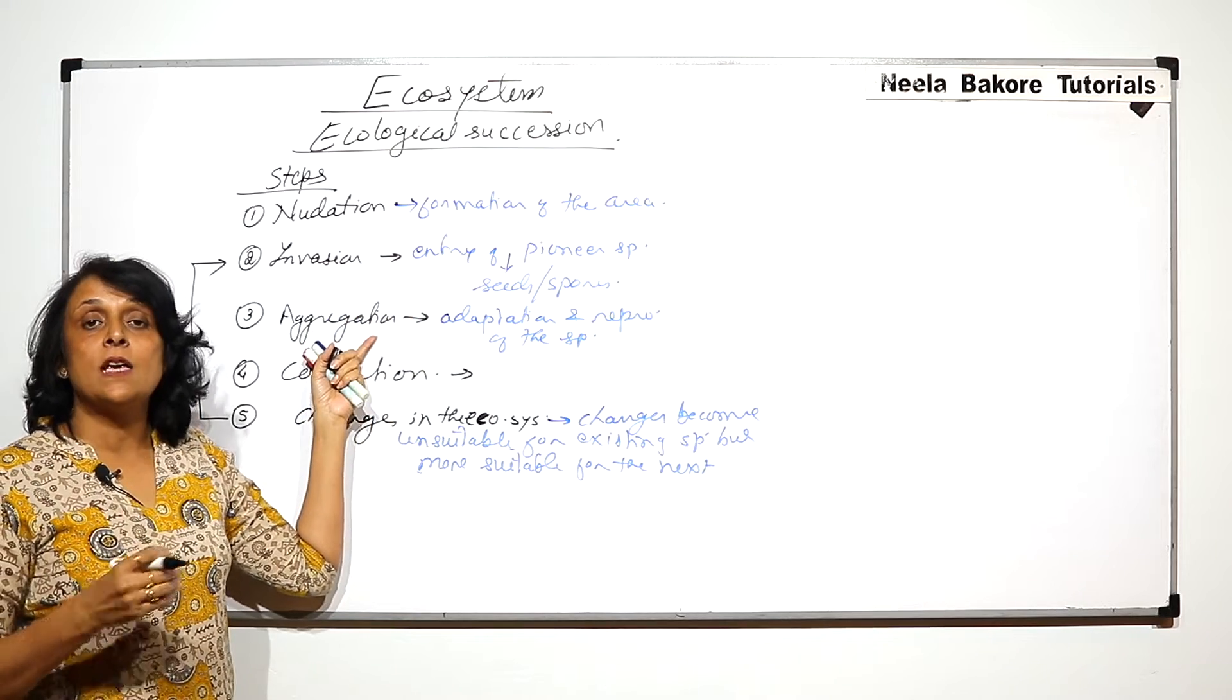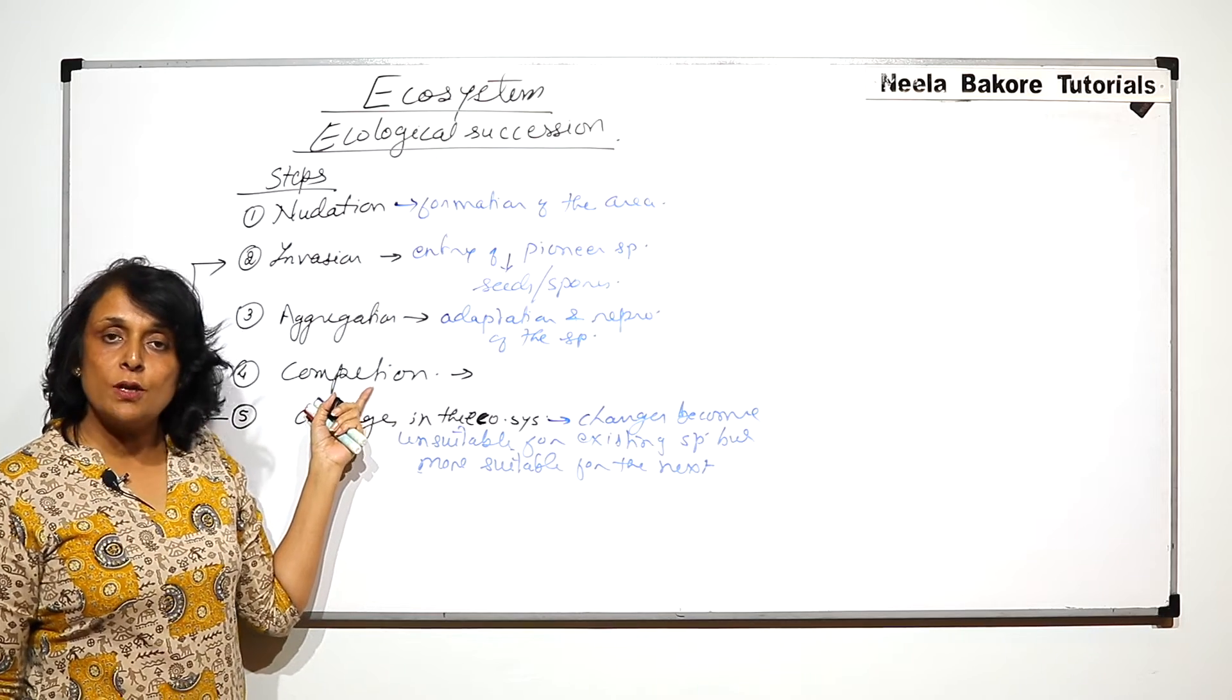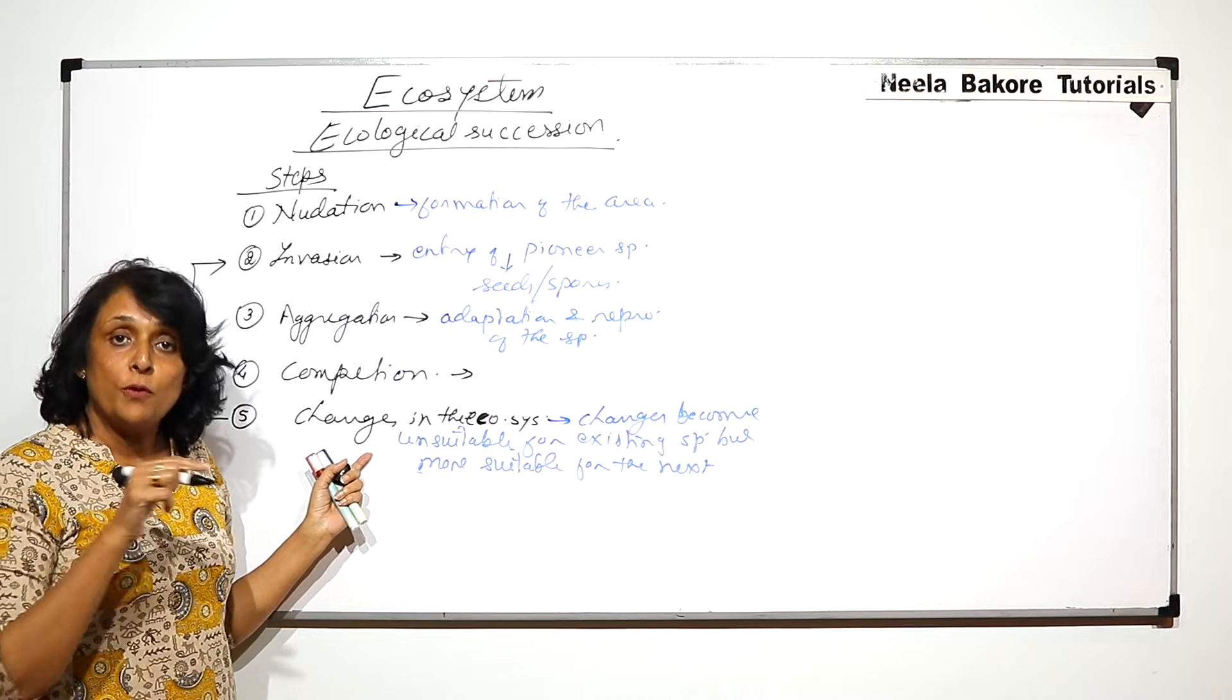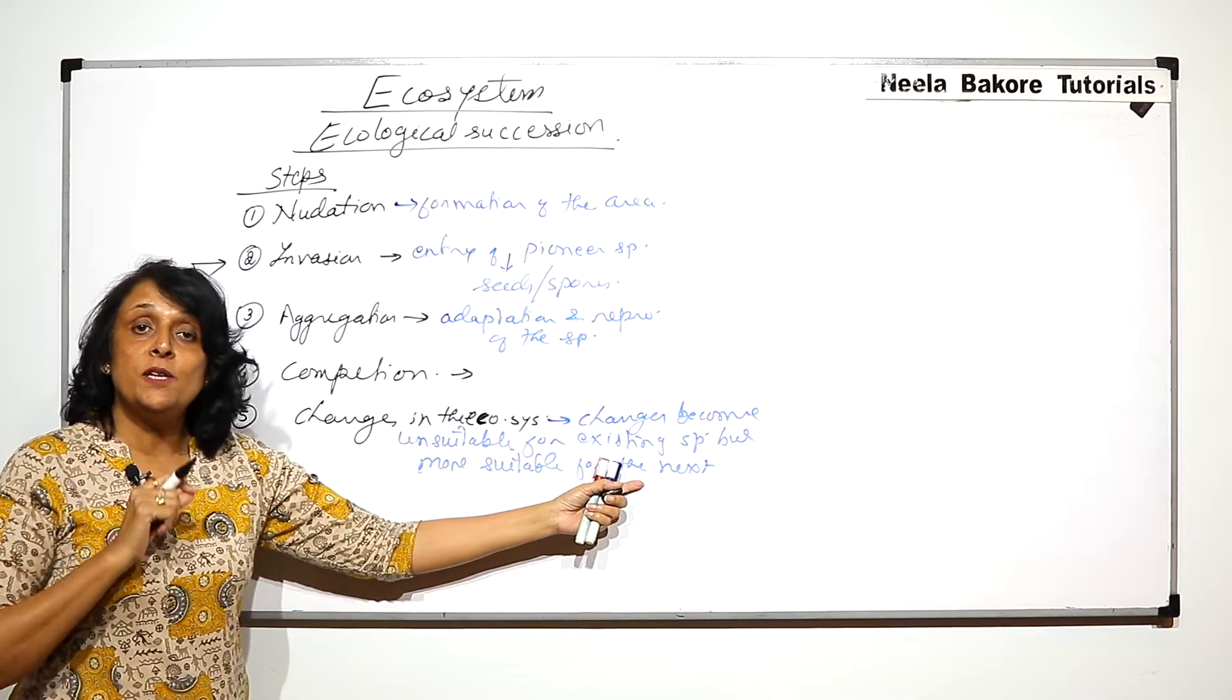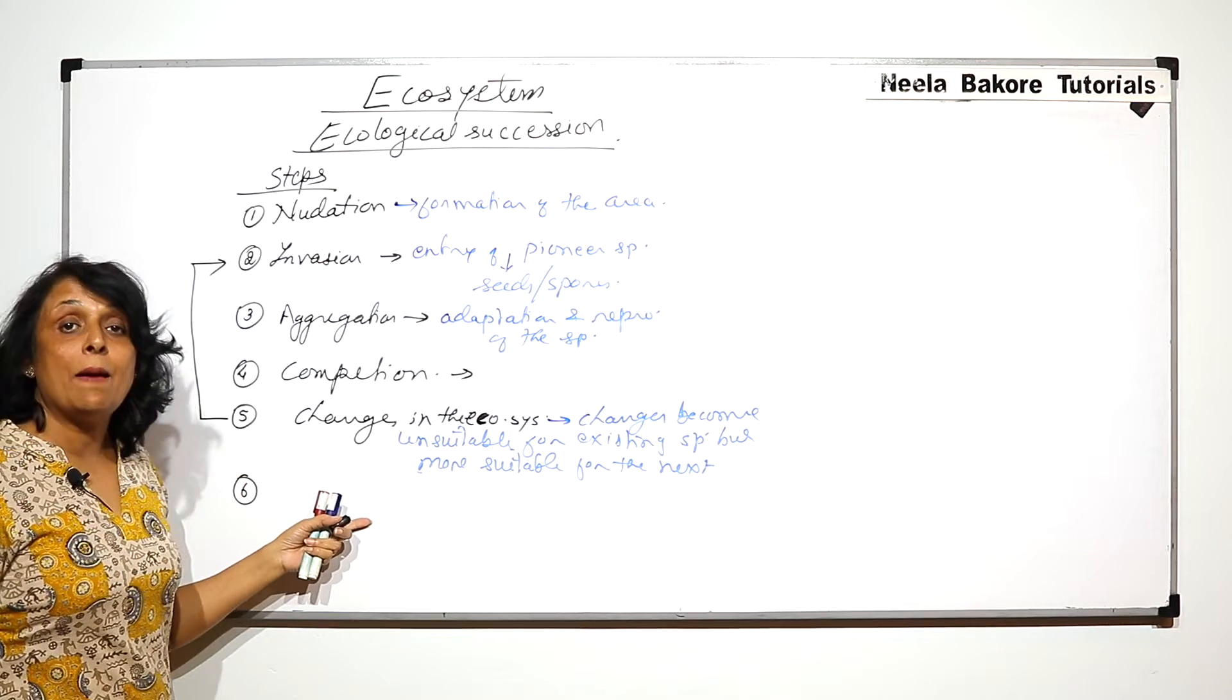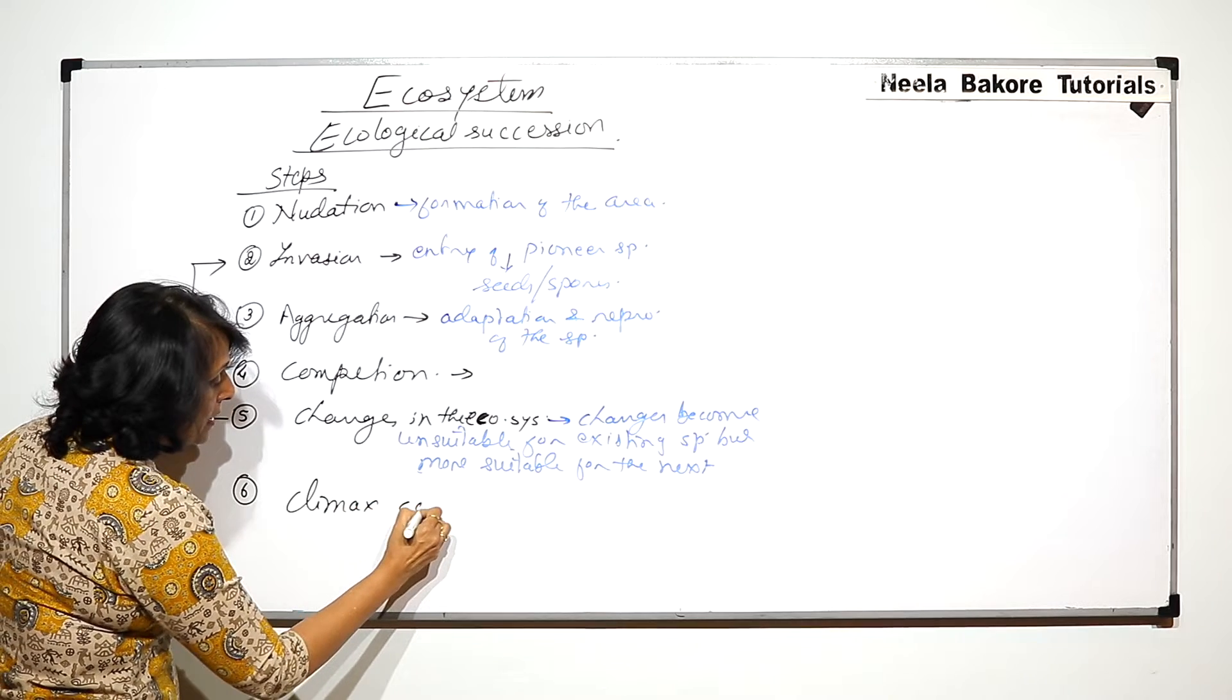That species adapts itself, reproduces, aggregates. Then there would be competition amongst themselves. Then they will bring about the changes which will become unsuitable for them but suitable for the next. Then the third species will invade. This cycle will go on till the last step is reached which is called climax community.